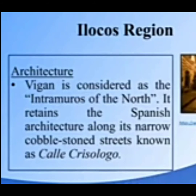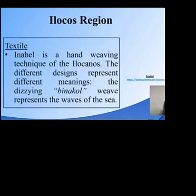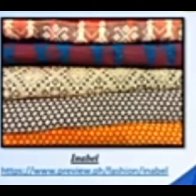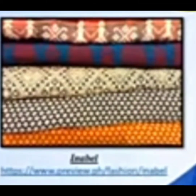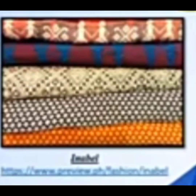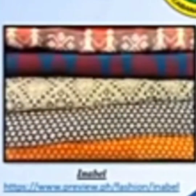Vigan retains the Spanish colonial architecture along its narrow and cobblestone streets known as Calle Crisologo. Inabel is a hand-weaving technique of the Ilocanos produced using traditional wooden looms. These different designs represent different meanings. The dizzying binakol weave represents the waves of the sea — they believe this design protects them from bad spirits. The Inabel designs are inspired by natural elements, patterns depicting different landforms, the color of flowers and vegetation, zigzags, animal patterns, and ocean waves of the glittering night sky.